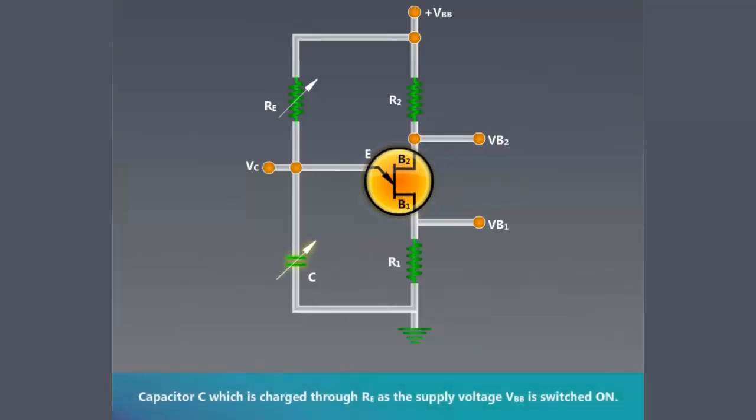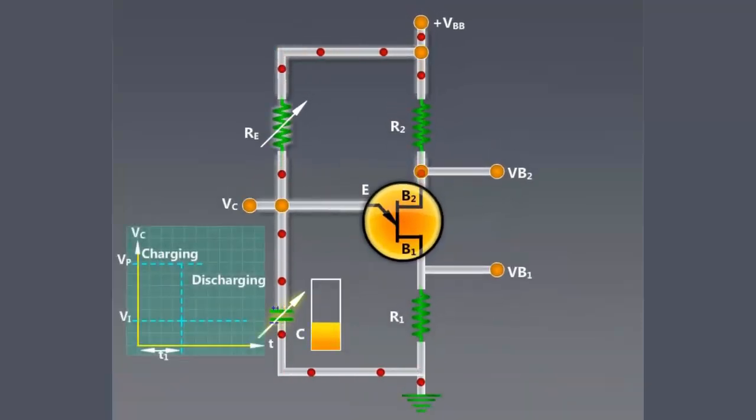The capacitor C which is charged through RE as the supply voltage VBB is switched on. The charging and discharging curve is drawn.